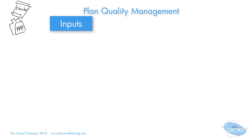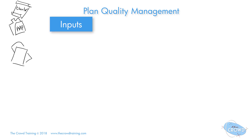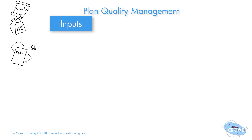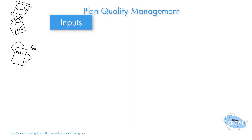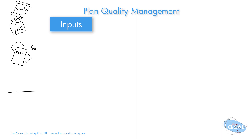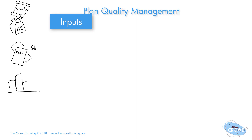We need that input to give us guidance. Additionally, we can use various different project documents. Those documents can range from the risk register to the stakeholder register, because if we're trying to meet the expectations of stakeholders, we have to know who those stakeholders are and what their needs, expectations, and influence are.